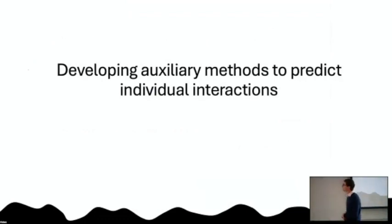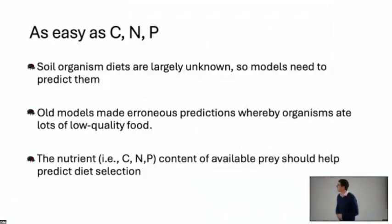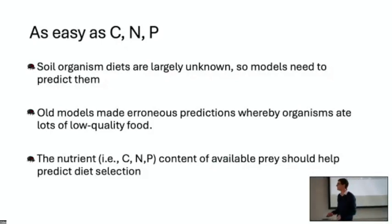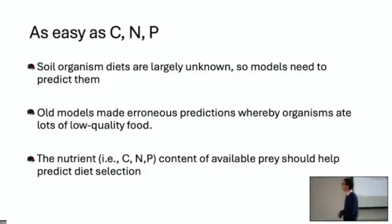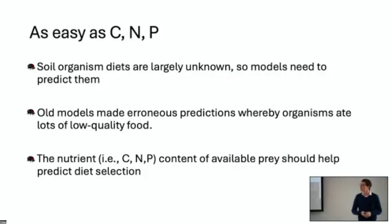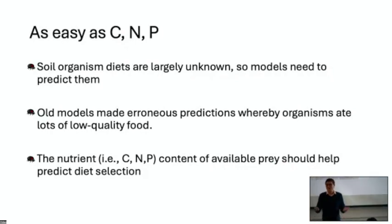Starting with the first example: developing auxiliary methods for individual interactions. The diets of soil organisms are largely unknown. There's a paper from a decade ago called 'The Enigma of Soil Animal Diversity' because we have no idea how these things coexist given that we think they just eat whatever they come across. As a consequence, we need models to predict what they're going to eat, and the model we were using before was making ridiculous predictions — that they would eat whatever was available, even though most of soil is not particularly nutritious.